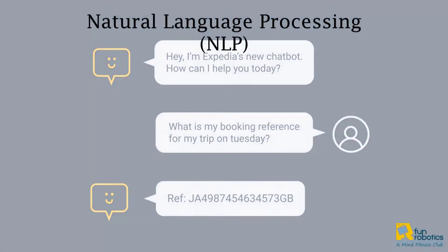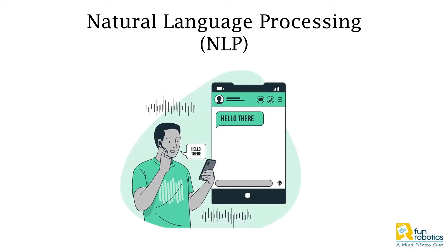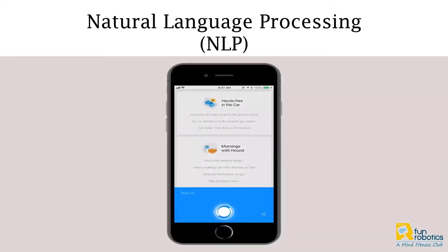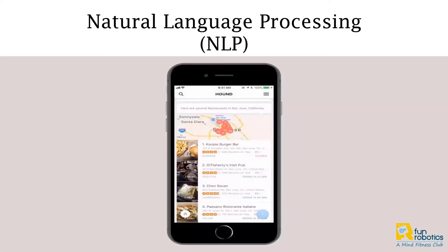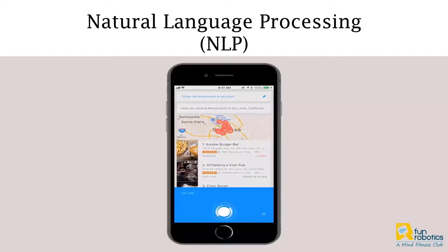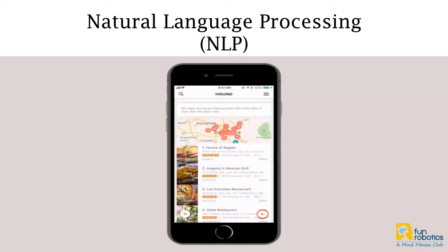We often experience this technology when we use chatbots for buying or inquiring about certain things. You all know virtual assistants like Google Assistant, Siri, Alexa, etc. It basically converts speech into text and uses NLP to understand your language. For example: 'Show me restaurants in San Jose' — 'Here are several restaurants in San Jose' — 'Only ones that are open now and have at least a four star rating' — 'Here are several restaurants with more than four stars that are open now.'